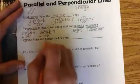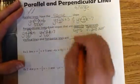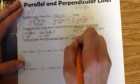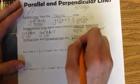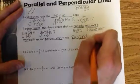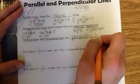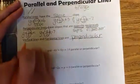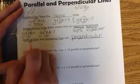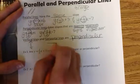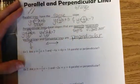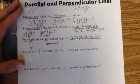All vertical lines and all horizontal lines are perpendicular. Vertical lines are up and down, horizontal lines are side to side, so if you put those together, they are perpendicular.